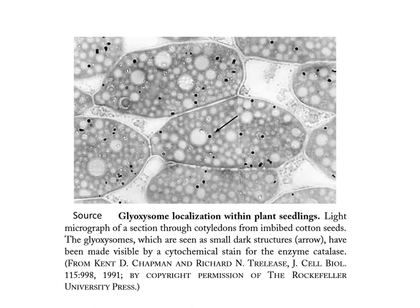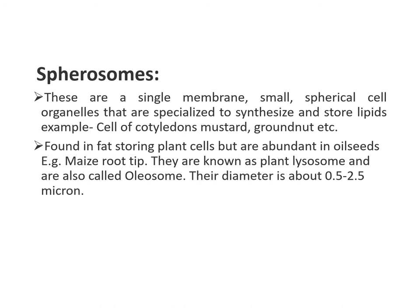The third type is spherosomes. These are single-membrane, small spherical organelles specialized to synthesize and store lipids — for example, in cells of the cotyledon of mustard and groundnut. They are mostly found in fat-storing plant cells but are abundant in oil seeds such as maize root tip. They are also known as plant lysosomes because they contain acid hydrolases, but they differ from lysosomes in the absence of some characteristic enzymes such as lipase. Their main function is synthesis and storage of lipids, and their diameter is about 0.5 to 2.5 micrometers.